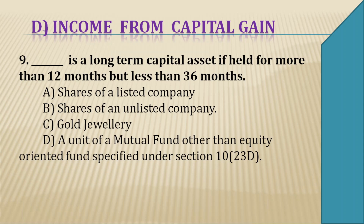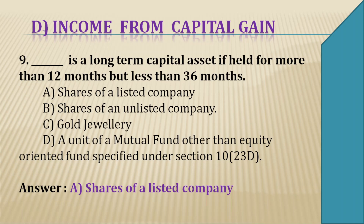Question 9: Which is a long-term capital asset if held for more than 12 months? Options are A — shares of a listed company, B — shares of an unlisted company, C — gold and jewelry, D — units of a mutual fund other than equity-oriented fund. Shares of a listed company are a long-term capital asset if held for more than 12 months.